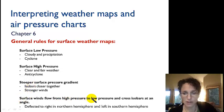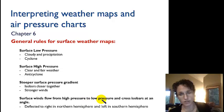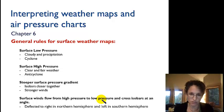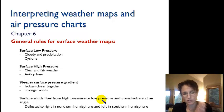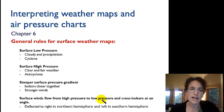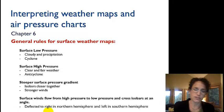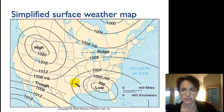Our surface winds flow from high pressure to low pressure. But remember there is the Coriolis effect as well as the frictional effect with the interaction of the air with the surface of the Earth. Therefore, the winds are not going to flow directly from high pressure to low pressure, but they're actually going to cross the isobars at an angle. In the northern hemisphere they're deflected to the right, and in the southern hemisphere they're deflected to the left because of the Coriolis effect.